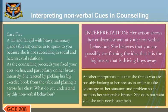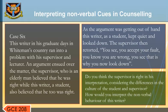Case 6: This writer, in his graduate days in a foreign country, ran into a problem with his supervisor and lecturer. An argument ensued over the matter. The supervisor, who was an elderly man, believed he was right, while this writer, as a student, also believed he was right. As the argument was getting out of hand, this writer kept quiet and looked down. The supervisor then remarked, 'You see, you accept your fault. You know you are wrong — that is why you now look down.'